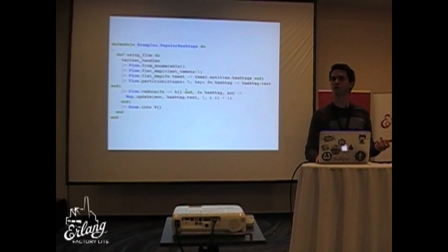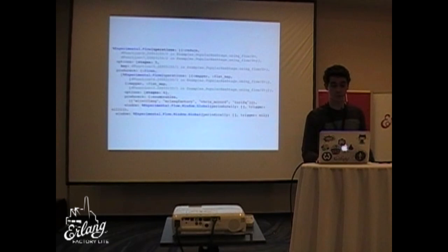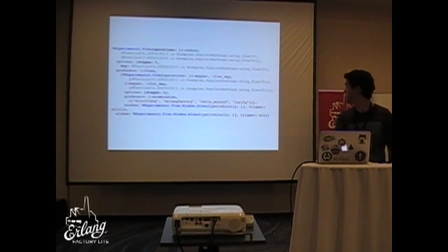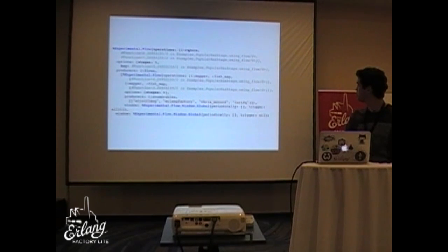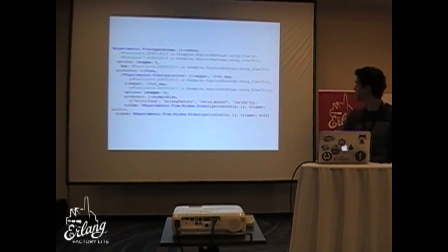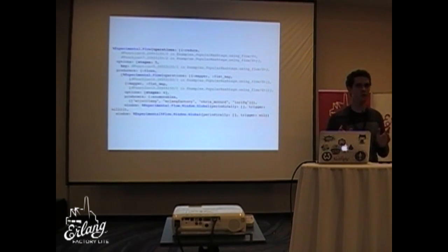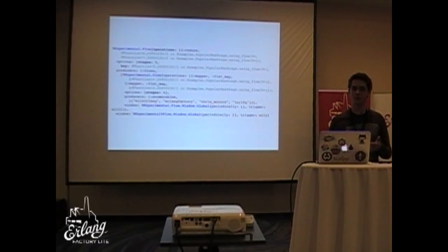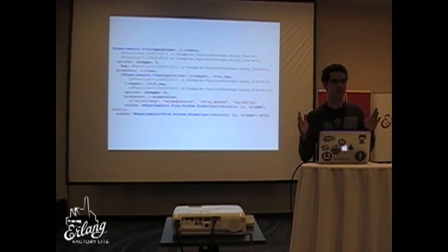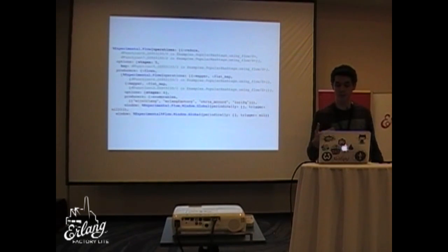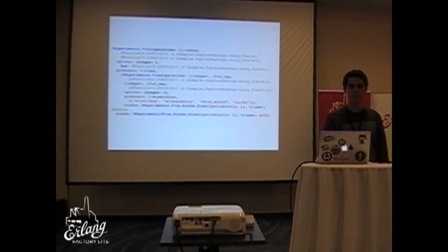If I don't ask for the Enum result, what do we get? We get this representation of the data structure of the flow — you can see the stages I passed in, the operation it's going to do (the reduce), the flows, the producers, our input, and some interesting options. One is the window: here we're not using windowing, but you can say 'every 100 elements give me some result.' Here we're using the global window, so we group everything together.